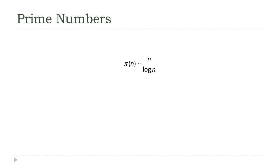We've actually already seen a statement about how these numbers are distributed — that was Euclid's statement that there are infinitely many primes. Just knowing that there are infinitely many of them tells us there is no upper bound; if you pick any number, there's always going to be a prime number greater than n. In this lecture, we're going to look at two theorems that give us information about how prime numbers are distributed, and they give us a practical tool for determining the prime factorization of a number.